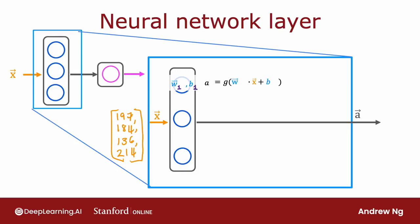...dot product of x plus b1, where this is the familiar z value from logistic regression in the previous course. And g of z is the familiar logistic function: 1 over 1 plus e to the negative z. So maybe this ends up being a number like 0.3, and that's the activation value a of the first neuron.